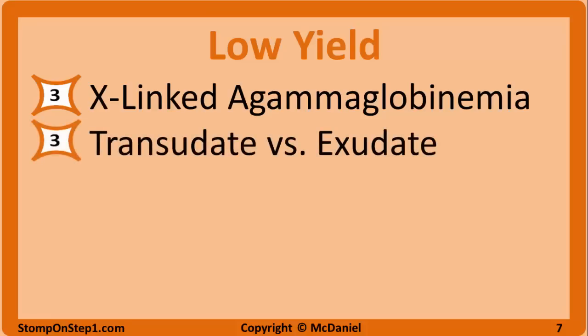With a high yield rating of 3, we have differentiating between a transudate and an exudate — know the basic difference in how these fluids are formed, as well as how to differentiate based on basic lab results; for example, looking at pleural fluid to figure out what caused the fluid buildup. Also with a rating of 3, severe combined immunodeficiency — low T cells and low B cells with low immunoglobulins, absence of the thymus like DiGeorge, and being able to identify the general picture of somebody who keeps getting similar infections repeatedly.